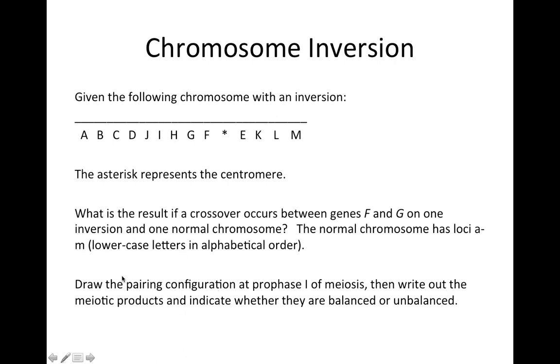The task is to draw the pairing configuration at prophase I, then write out what happens after meiosis occurs, and indicate whether they're balanced or unbalanced. Balanced means they've got all the proper genes on the chromosome with no gains or losses. Even if it's inverted, it can still be balanced. Unbalanced would be if it's gained or lost any loci.